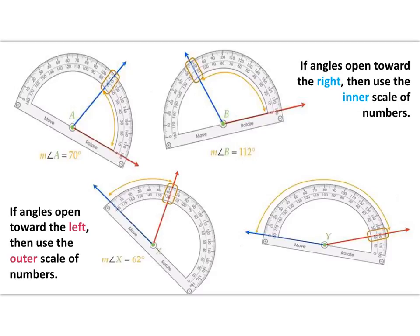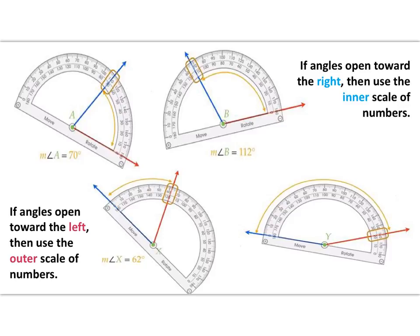Here are some additional examples. If the angles are opening towards the right — where one of your rays lined up on the edge is pointing to the right — you use the inner scale, then find the number on the second side of the ray to get the measure. If your angle opens to the left, with one ray pointing left, then you use the outer scale of numbers.